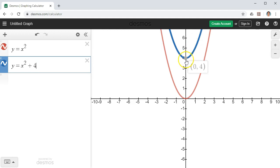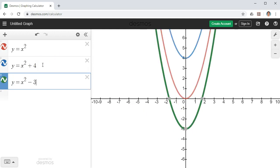So how do you think we could possibly move it down 3 places? Well, if we take the same parabola and subtract 3 at the end, we can see it's moved our parabola down 3 places.